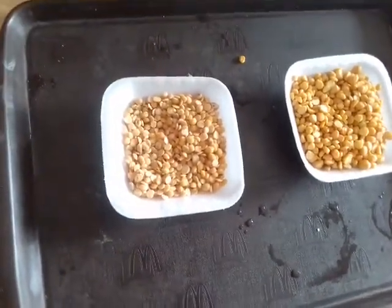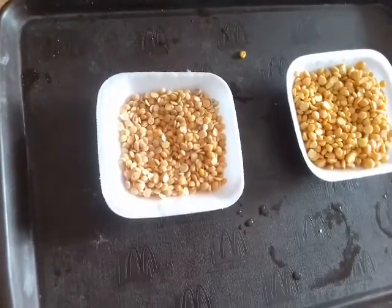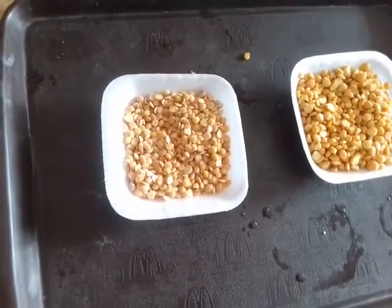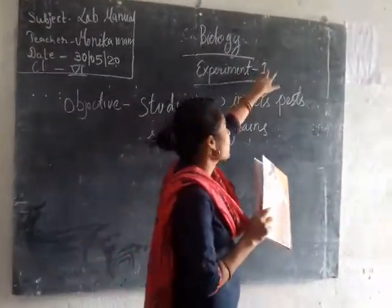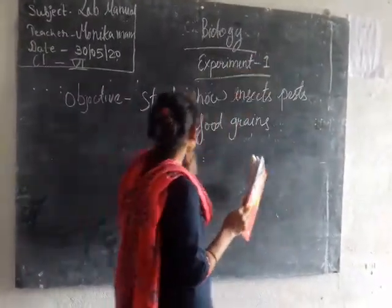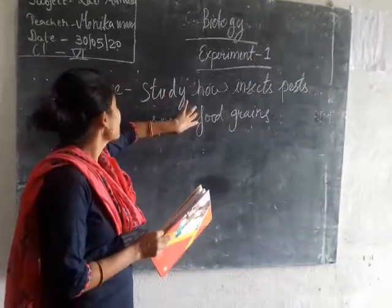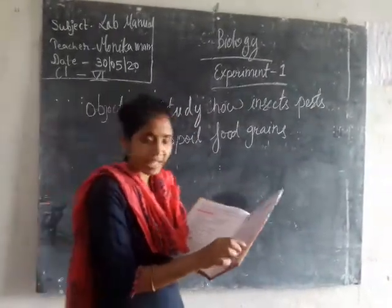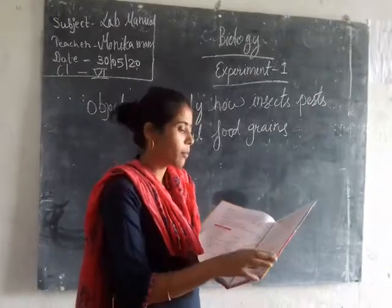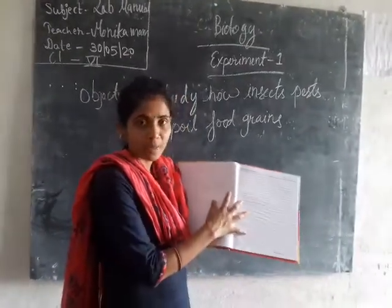Complete this experiment in your lab manual by writing the heading: experiment number 7, then the objective, the aim, the date, and your index. Write everything down and complete it in your lab manual.